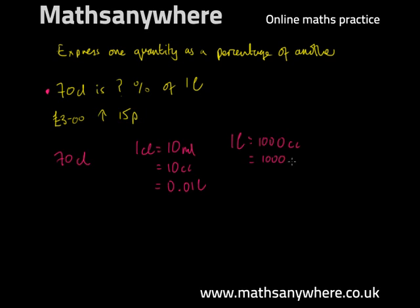Because 1 liter equals 1,000 cubic centimeters, which is the same as 1,000 mils, which is the same as 100 centiliters. That being the case, we can convert our centiliters to liters, which is probably the easiest thing to do. The fact is that 1 centiliter is 0.01 liters, so 10 centiliters would be 0.1 liters. 70 centiliters is therefore 0.7 liters.